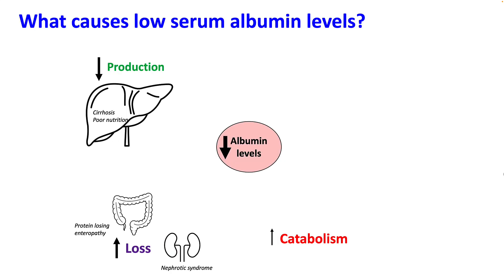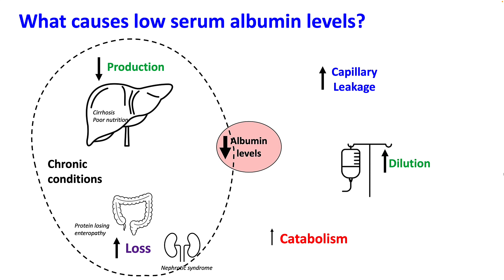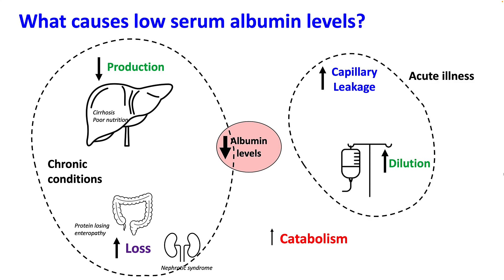The causes of low serum albumin are decreased production, as seen in cirrhosis and poor nutrition, or increased loss, as seen in protein-losing enteropathy and nephrotic syndrome. In acute conditions, increased capillary leakage and dilution from IV fluids are possibly the main culprits.